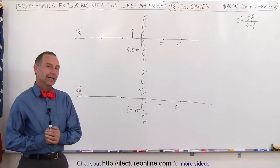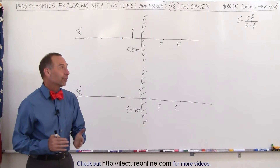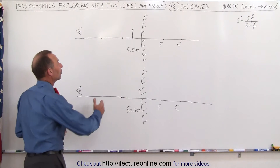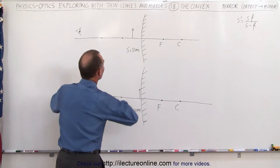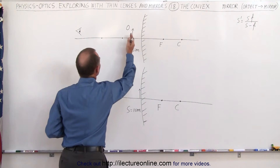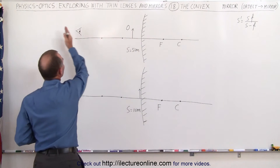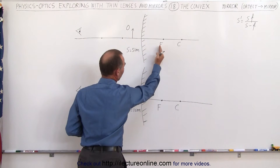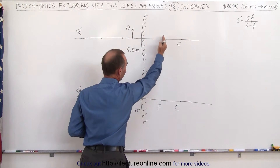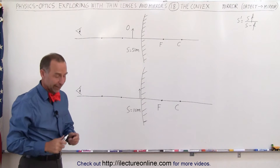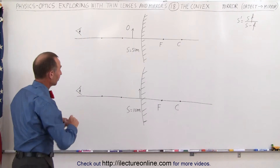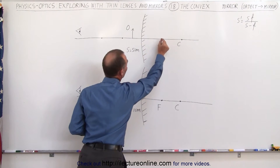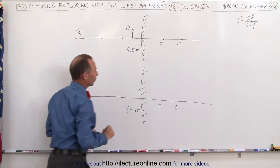Welcome to Electronline. In the previous two videos we saw that with a convex mirror, as we took the object and placed it farther and farther away from the mirror, an image would be formed closer and closer to the focal point behind the mirror. In the limit, as the object moved out to infinity, the image would form at the focal point.